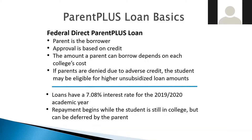The other federal loan noted is the Parent PLUS loan. In this case, the parent is the borrower and approval is based on the parents' credit, depending on the cost of the college. One key thing: if parents are denied due to adverse credit, the student may be eligible for higher unsubsidized loans — contact the school to find out options. The Parent PLUS loan rate was 7.08% for last year's academic year, and repayment begins when the student enrolls, though it can be deferred by the parent.